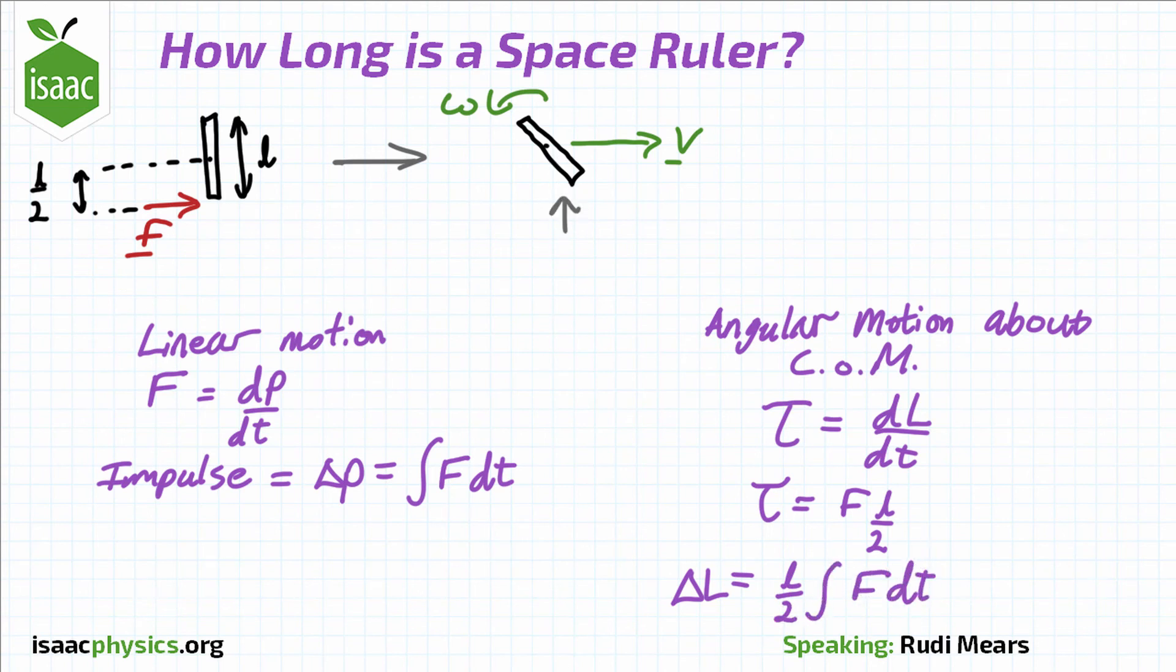From here, just remember that the moment of inertia of a rod about its center of mass is 1/12 mL², where m is the mass of the rod. And we have all the pieces that we need to be able to solve the problem.